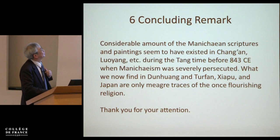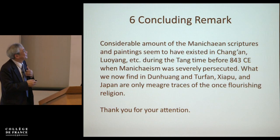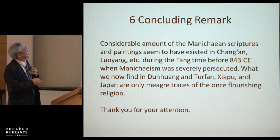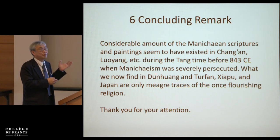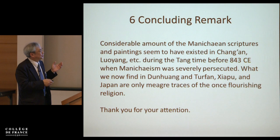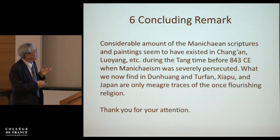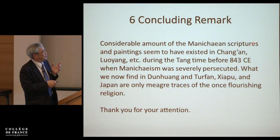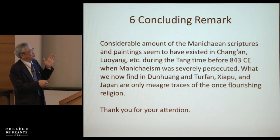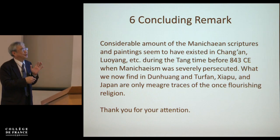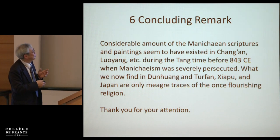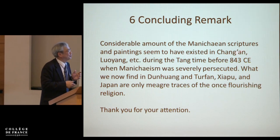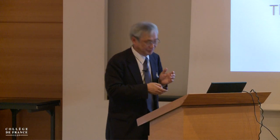So I come to the concluding remark. A considerable amount of Manichaean scriptures and paintings seems to have existed in Chang'an and Luoyang — the central part of the Tang Empire — before 843 CE. When Manichaeism was severely persecuted, there were quite a few remains from Tang time but they disappeared. What we now find in Dunhuang, Turfan, Sharp, and Japan are only meagre traces of the once flourishing religion. Thank you.